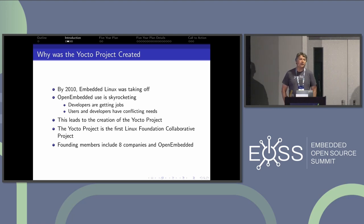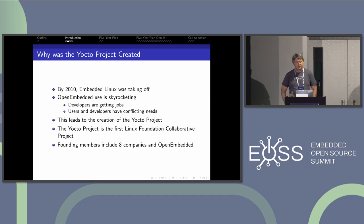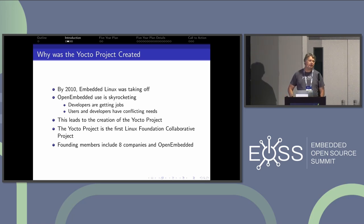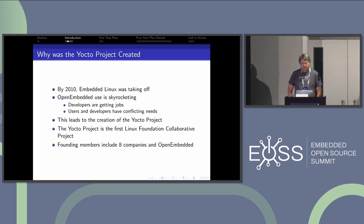Commercial users had taken note — they were hiring anyone who had OpenEmbedded experience. There was no clear development direction or development processes, and it was creating a lot of conflicts. The hobbyists would break the build over the weekend, the commercial guys would break the build during the week, and everyone was angry at each other. So this created the conditions to start the Yocto project.